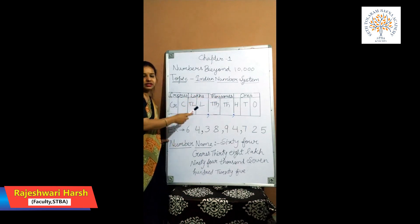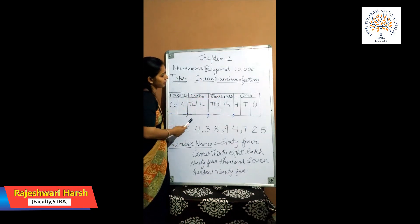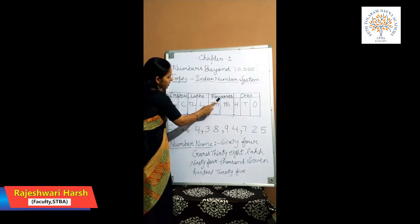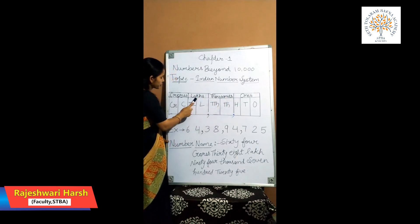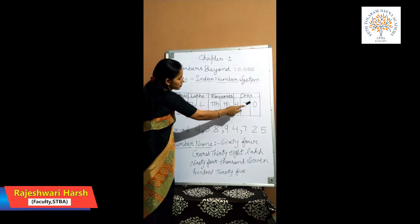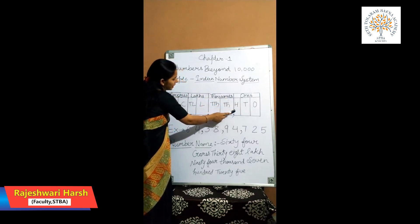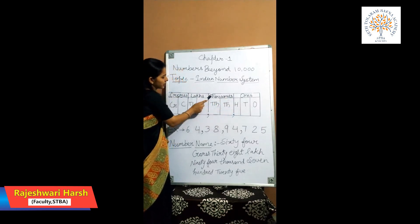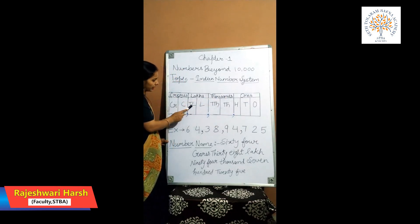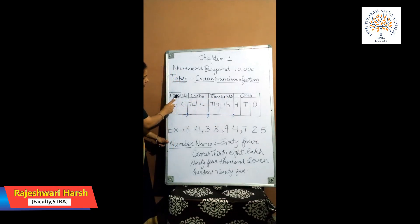In the Indian Number System there are four groups: ones group, thousands group, lakhs group, and crores group. Ones group consists of ones, tens, and hundreds. Thousands group consists of thousands and ten thousands. Lakhs group consists of lakhs and ten lakhs. Crores group consists of crores and ten crores.